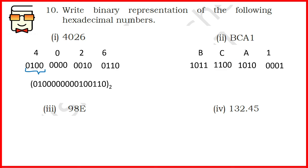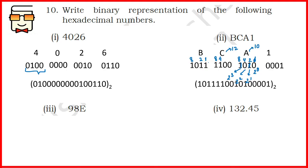To verify the correct binary representation: A is 10. In binary the place values are 2^0=1, 2^1=2, 2^2=4, 2^3=8. So there is a 1 at position 8 and a 1 at position 2, giving 8+2=10. Similarly, C is 12, requiring 8+4, so a 1 at position 8 and position 4. B is 11, requiring 8+3; since 3 is 2+1, you need a 1 at positions 8, 2, and 1. That is how you convert each hexadecimal digit into the binary number system.